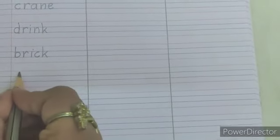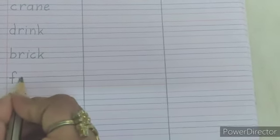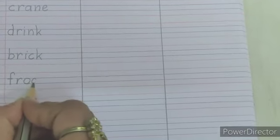Now next spelling is of frog. F-R-O-G Frog. Now the last one. Grass. G-R-A-S-S Grass.